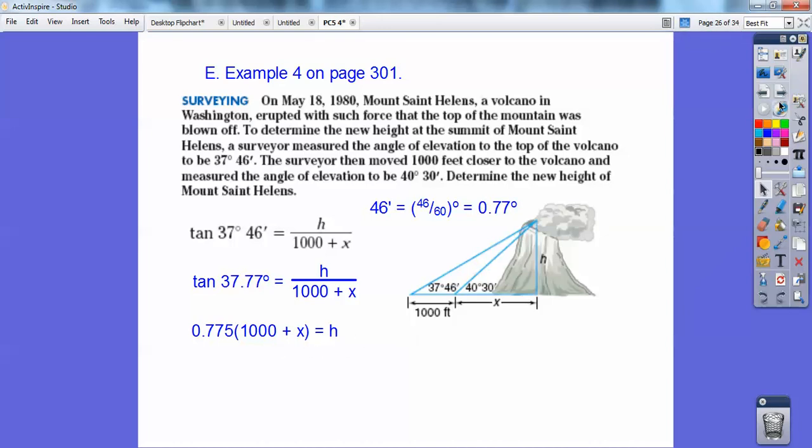Now, I don't know what to do with that yet. So I'm going to use the other right triangle and use the tangent of this. Now, 30 minutes is 0.5 of a degree. So tangent of 40.5 degrees is opposite over adjacent. So opposite over adjacent. And then the tangent of 40.5 is 0.854 equals h. Now, this equals h. This equals h. So that means this side equals this side right here.